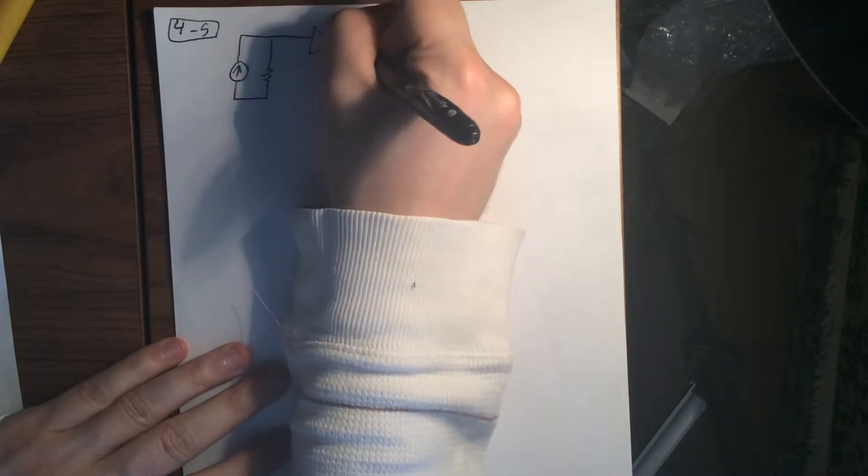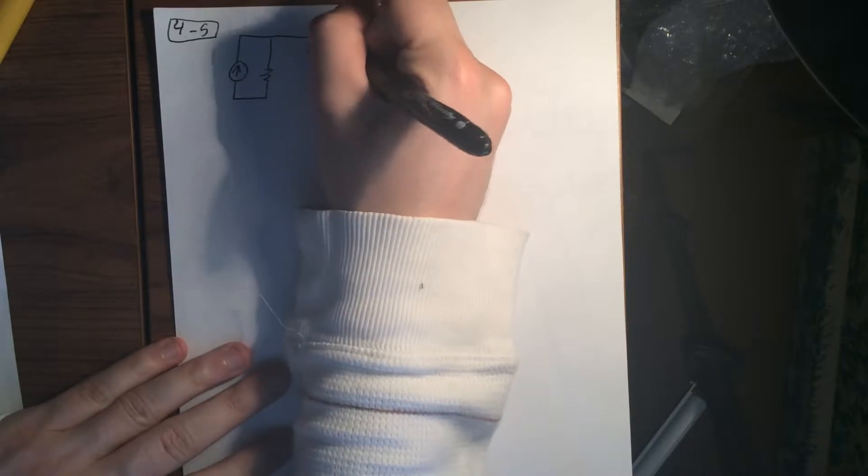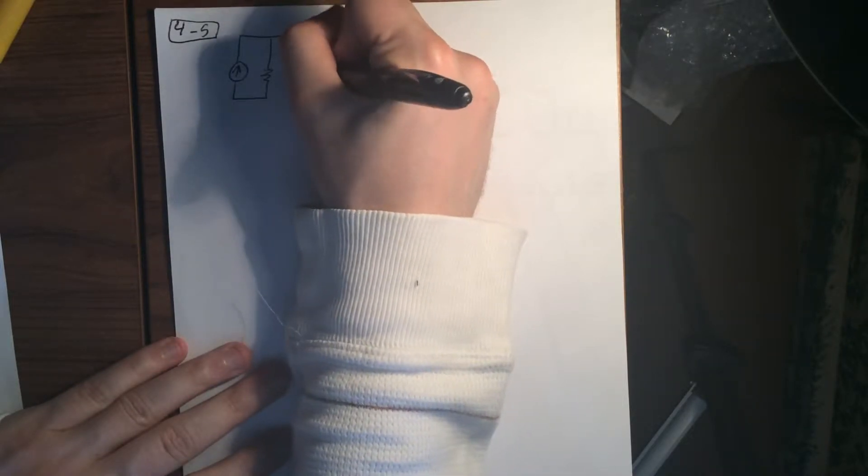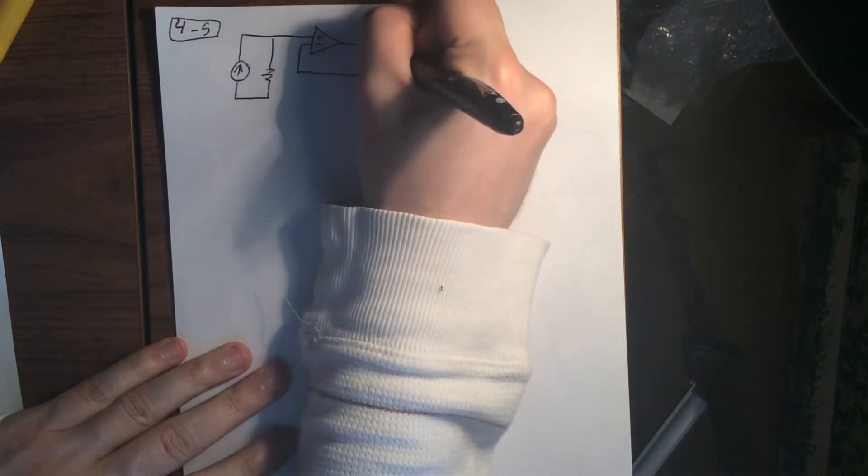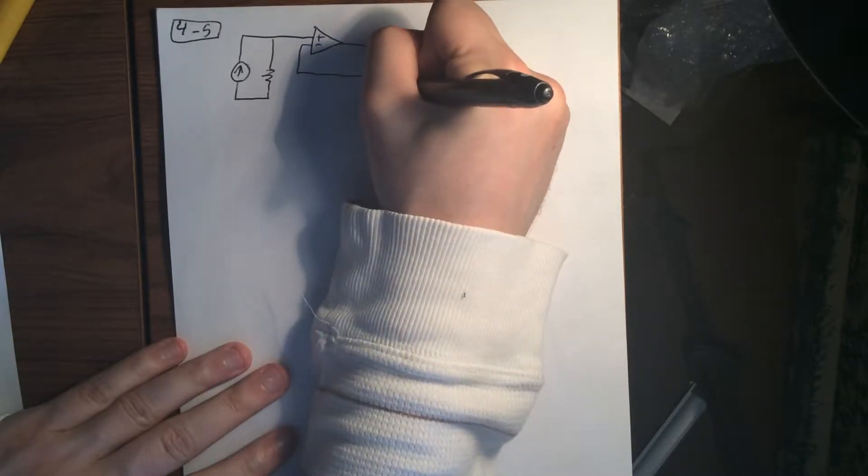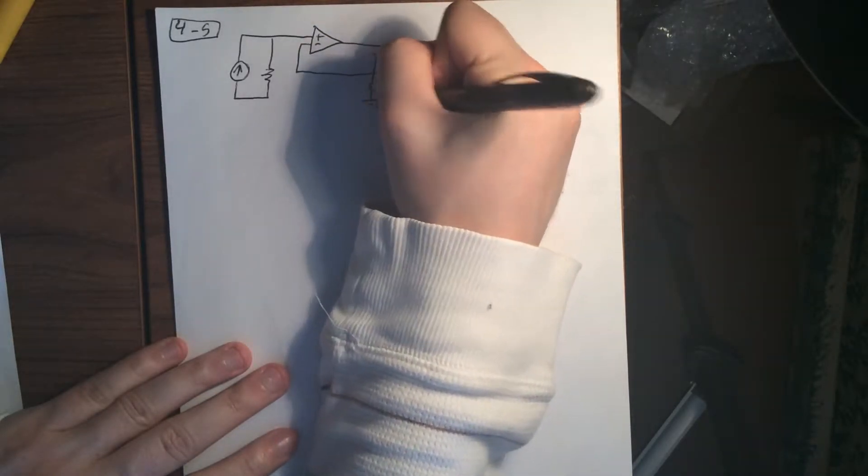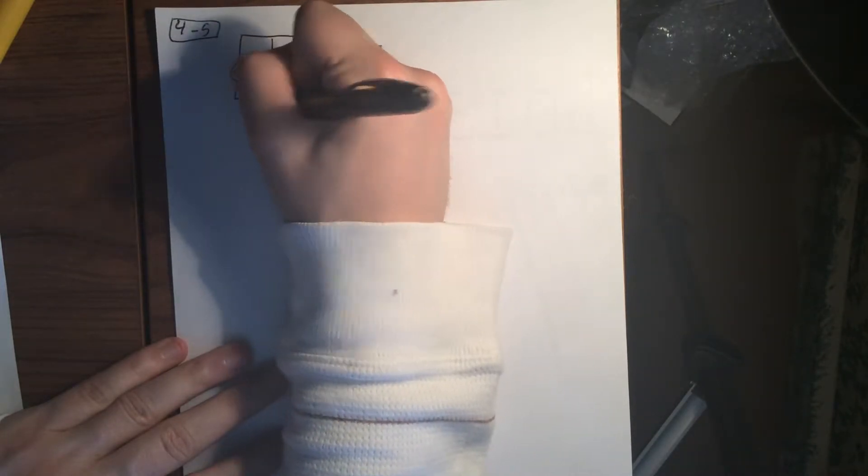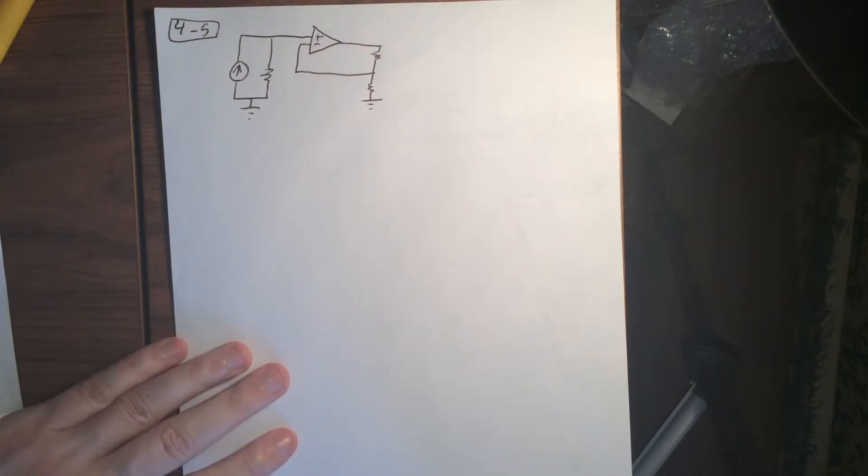That's going to go into our op-amp on the positive side. On the negative side, we've got our feed-out. This is our feedback right here. And that goes to ground. And then, of course, we're going to bring this to ground, too.